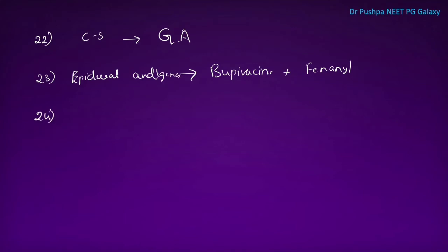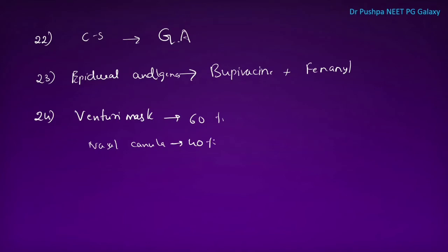Maximum oxygen delivered by a venturi mask is 60%, whereas through a nasal cannula it is 40%. The drug of choice for bradycardia in children is intravenous epinephrine.